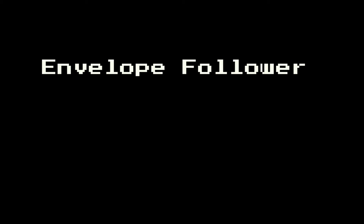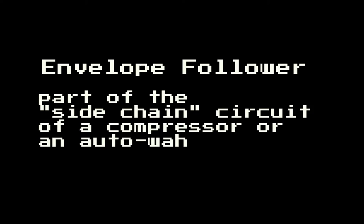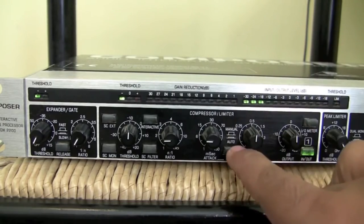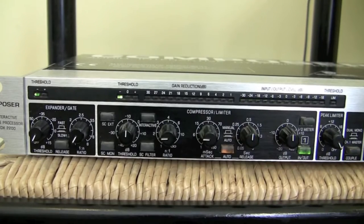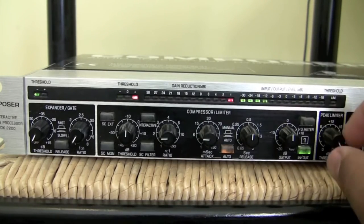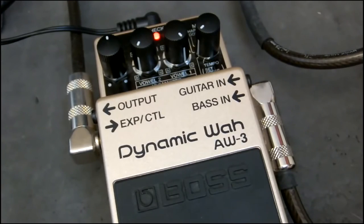An envelope follower is part of the side chain circuit of a compressor or an auto-wah. This is an example of a compressor. It reduces the volume of loud sounds or amplifies quiet sounds by compressing a signal's dynamic range. An auto-wah is a type of wah-wah effects pedal that is used with electric guitars, bass guitars, and electric pianos. This is the effect produced by an auto-wah.